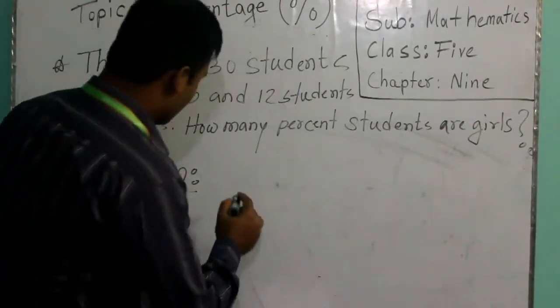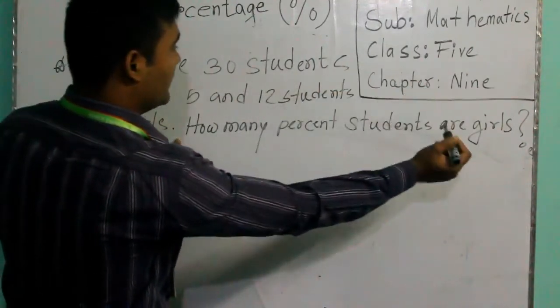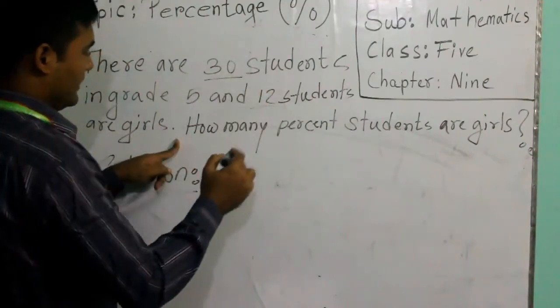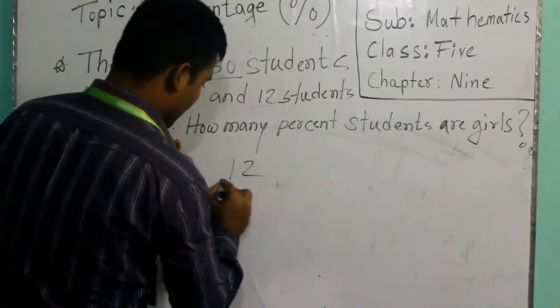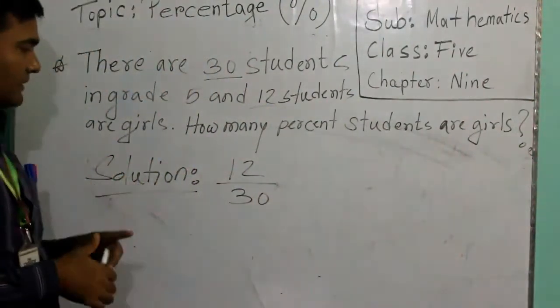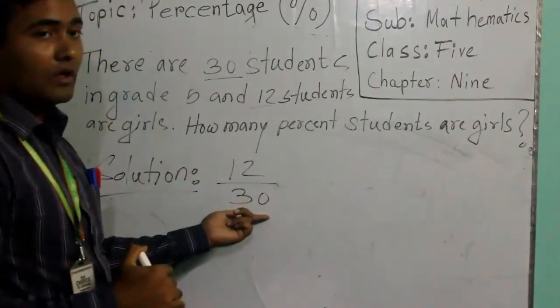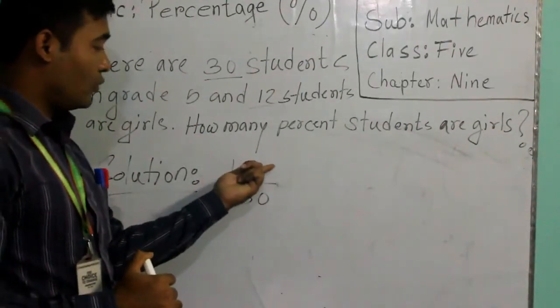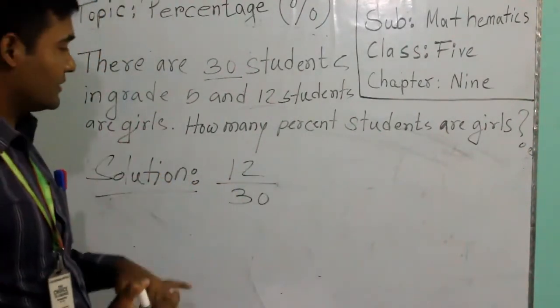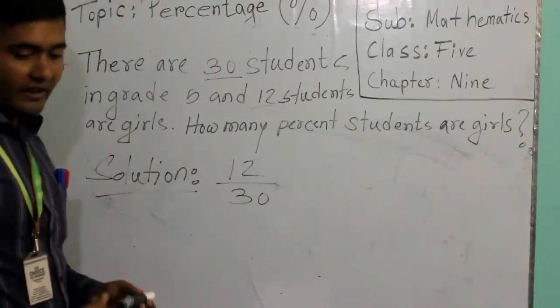There we go. There is a total number. How many girls are there? 12 out of 30. So 12 girls out of 30. Always do not forget it - choose the total number and try to put it down. And from which number you want to get the percentage, always put that one on the top. This is very easy method.